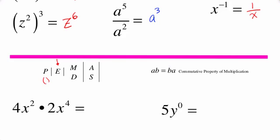So let's take a look at 4x squared times 2x to the fourth. According to the commutative property of multiplication we can actually multiply the 4 times 2 — we just rearrange them and put the 4 next to the 2. Obviously that's going to be 8. And then you put x squared next to the x to the fourth, and you actually add the exponents. So you get 8x to the sixth.